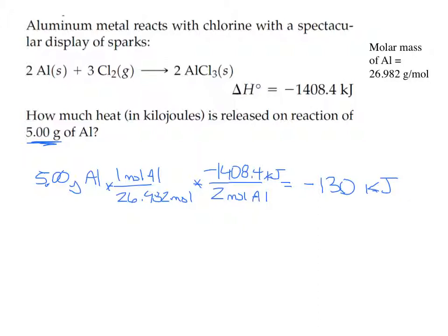Why didn't we have to worry about a limiting reactant in this problem? They don't explicitly tell us about the chlorine, so we assume all we need to worry about is the aluminum. If they had given us an amount of chlorine, this would be a limiting reactant problem. On the exam, some of you got excited about limiting reactants when there wasn't one — if they only give you information about one reactant, there's no limiting reactant issue.